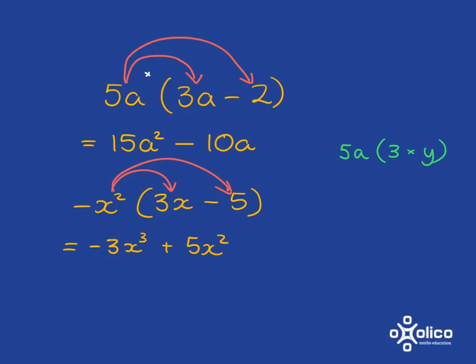Just a quick aside: the distributive law applies when you are multiplying over a bracket that has an addition or a subtraction inside. But if the bracket has just a multiplication inside, you don't apply the distributive law. For example, 5a multiplied by 3 multiplied by y — you simply go 5a times 3 is 15a, times y is just 15ay.